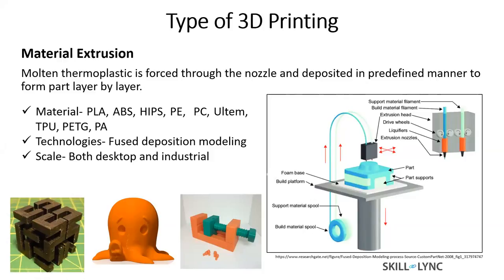Most desktop printers — and most 3D printed products you see in the news — are manufactured by FDM or fused deposition modeling, about 90% of the time. All thermoplastics can be used in FDM. The typical materials are PLA and ABS, but you can also use HIPS, PE, ULTEM, TPU, PETG, PA, HDPE, and PE.